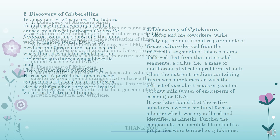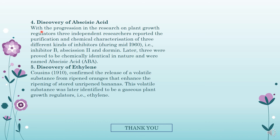The next hormone we will discuss is the discovery of abscisic acid. With the progression in the research on plant growth regulators, three independent researchers reported the purification and chemical characterization of three different kinds of inhibitors: inhibitor B, abscission 2, and dormin. Later, all three were proved to be chemically identical in nature and they were called abscisic acid. Abscisic acid is a growth inhibitor — it inhibits the growth and development of the plant. For example, it is used in bringing about the dormancy of the seed. When the seeds are developed, immediately they do not start germinating; they remain in a dormant state and later on when they get favorable conditions, they germinate into a new plant. So dormancy is a very important and vital characteristic of the seeds, and that is brought about by abscisic acid.